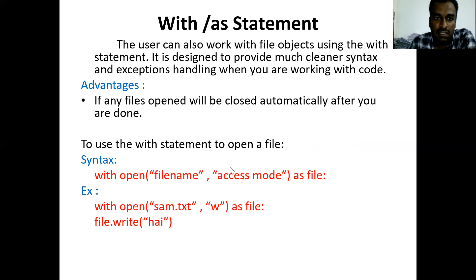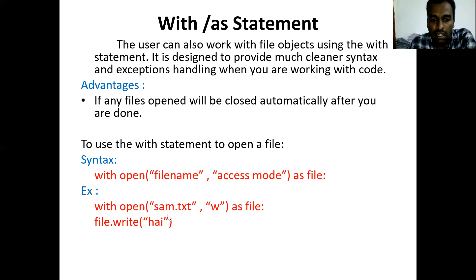Next, the with...as statement. The user can also work with the file object using the with statement — it is designed to provide much cleaner syntax and exception handling when working with code. The syntax is: with open(file, access_mode) as file. For example: with open('sambra.txt', 'w') as file, then file.write(). After opening sambra.txt, you write content into it and see the content in sambra.txt. That is the use of the with...as statement.